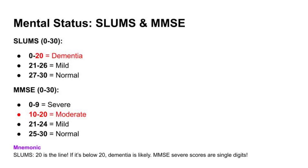MMSE is also scored from 0 to 30. 0 to 9 equals severe, 10 to 20 is moderate, 21 to 24 is mild, and 25 to 30 is normal. Remember: 20 is the line. If it's below 20, dementia is likely. For MMSE, remember that severe scores are single digits.